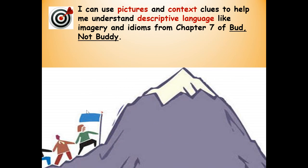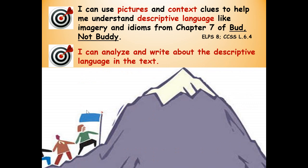Let's read our learning target and success criteria. Our learning target is: I can use pictures and context clues to help me understand descriptive language like imagery and idioms for Chapter 7 of Bud Not Buddy. Our second learning target is: I can analyze and write about the descriptive language in the text. And that will be when you answer the comprehension question.